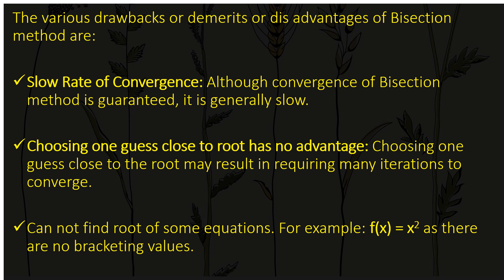The various drawbacks or disadvantages of using the bisection method are: the first one is slow rate of convergence. Although convergence in the bisection method is guaranteed, it is generally slow because it requires around 14 to 15 steps to find the root. However, the convergent value will be very near to the exact value — it gives an approximate root that is very close to the exact root of the given equation.